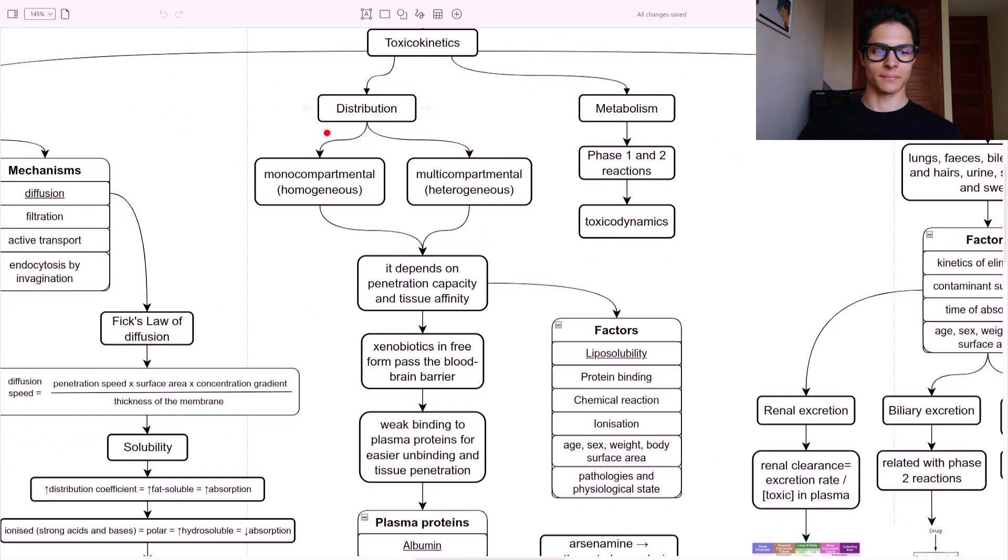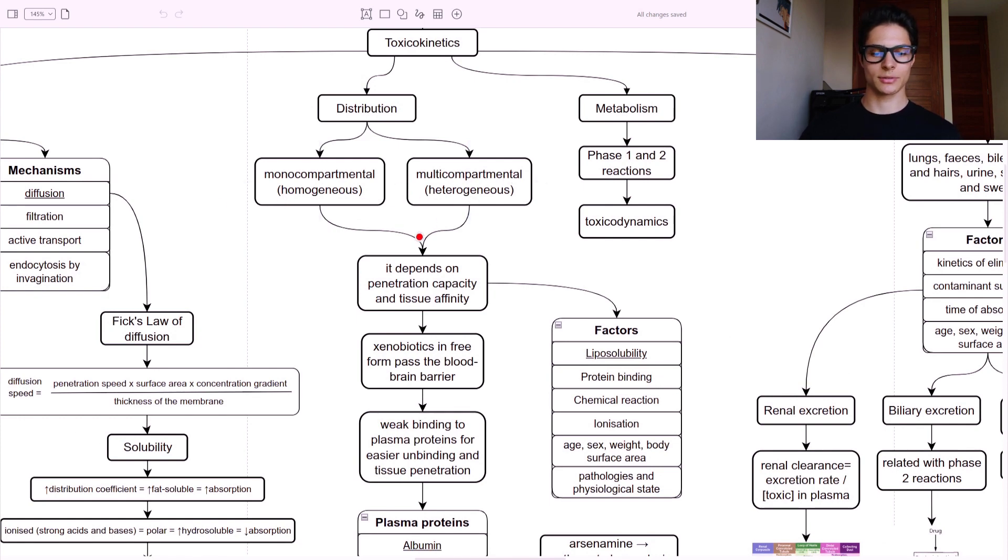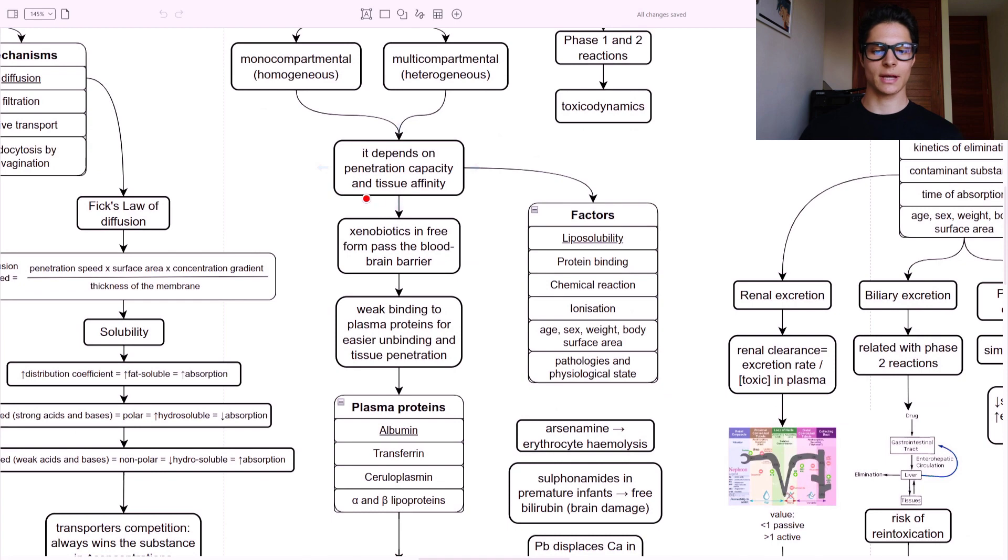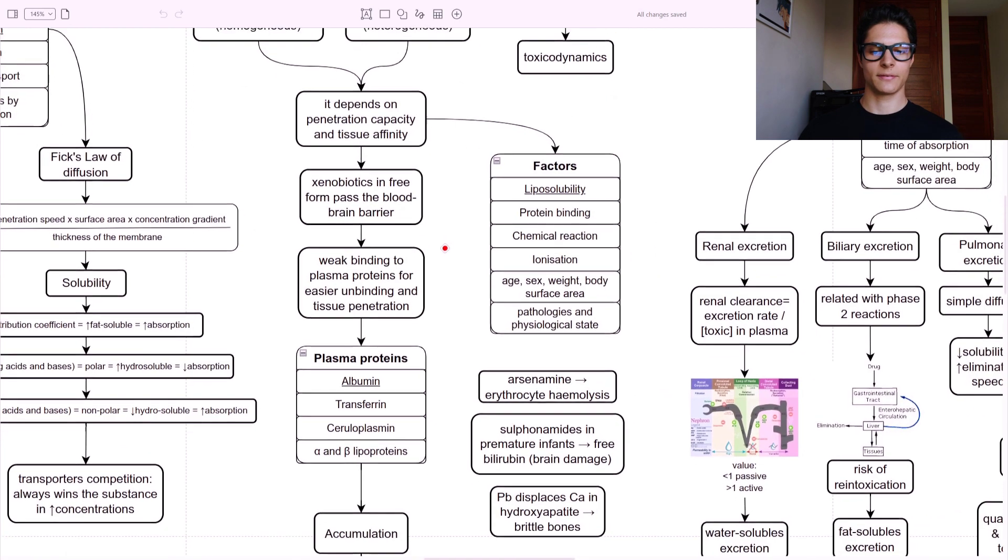Then we have distribution. Monocompartmental or multicompartmental - it can be homogeneous or heterogeneous. It depends on penetration capacity and tissue affinity. The factors are the liposolubility - fat soluble is higher absorption - protein binding, chemical reactions, ionization, the age, sex, weight, body surface area, especially weight, pathologies, and physiological state of the individual.